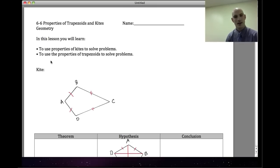Let's talk about a kite. First, a kite is a quadrilateral because it has four sides with exactly two pairs of consecutive congruent sides. So exactly two pairs of consecutive congruent sides.